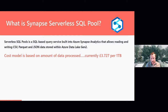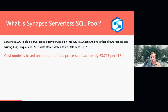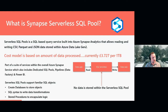It currently supports CSV, Parquet, and JSON. The most important aspect of the service is that its cost model is not based on how long your queries run or how powerful the service is set at — it's based on how much data is being processed, read, and written. Currently it's around £3.70 for one terabyte of data processed. So if you've got one SQL query that reads a terabyte doing a group-by operation, it's going to cost you £3.70.